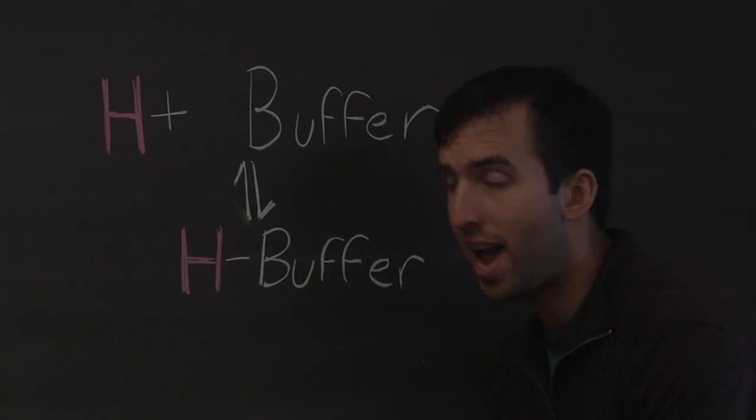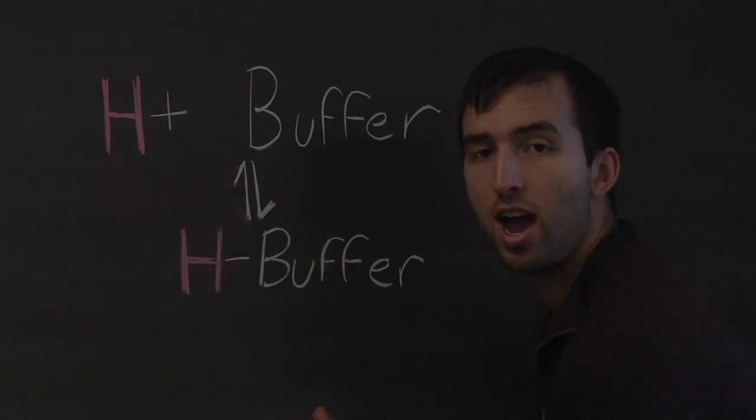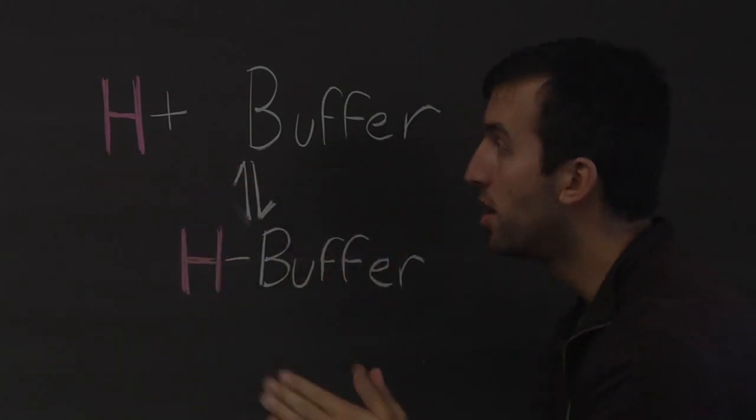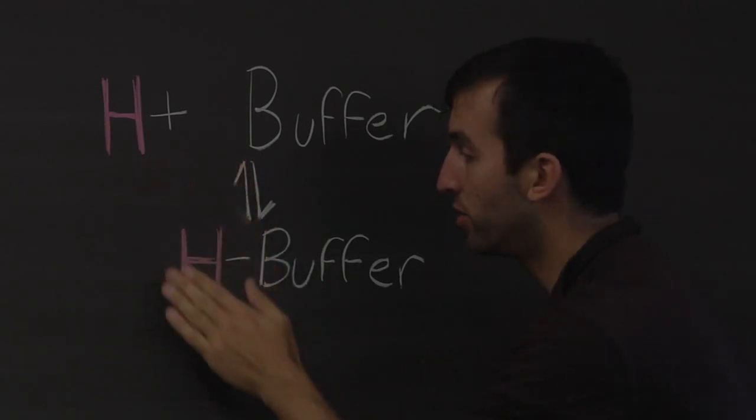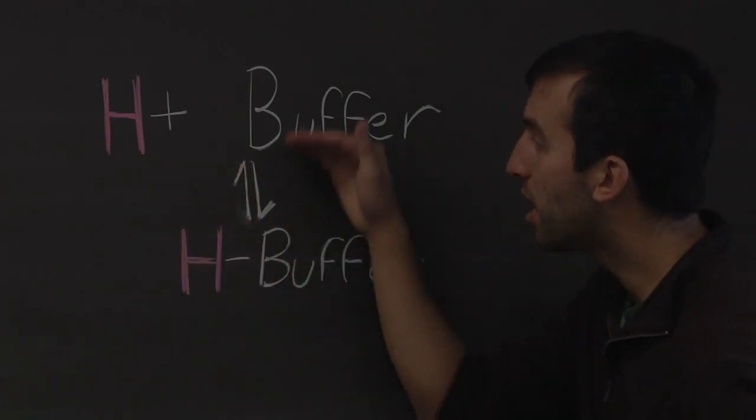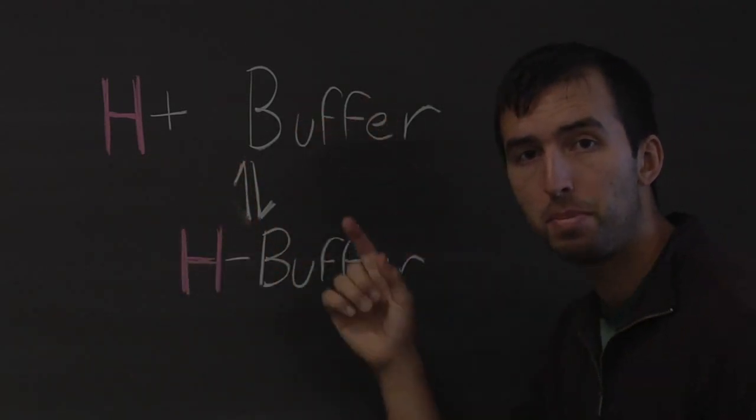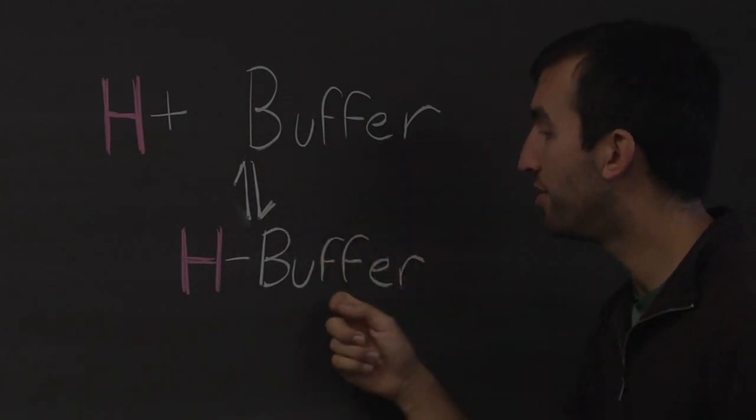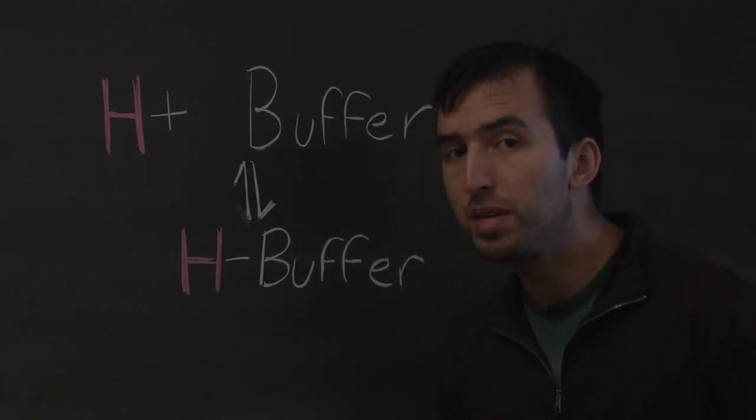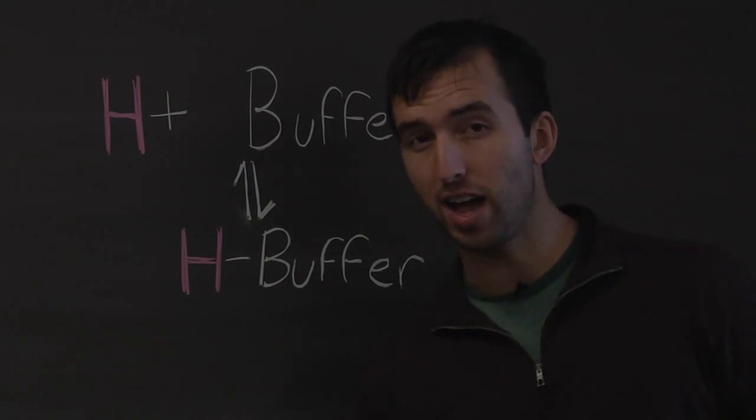So when we add a strong acid, all these extra hydrogen ions are released. With the buffer in play, some of those extra hydrogen ions are absorbed, and they come to an equilibrium between this stage and this stage. That equilibrium will be calculated from your Ka values.